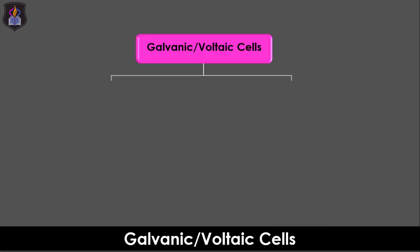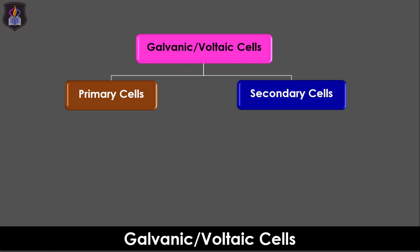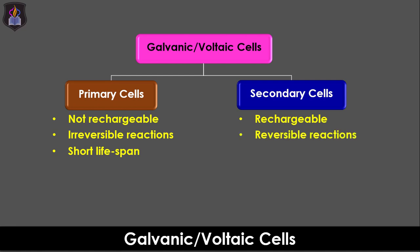There are two types of galvanic cells: the primary cells and the secondary cells. Primary cells are those devices that cannot be recharged once they are used up. In other words, their reactions are irreversible and they have a short lifespan. While secondary cells are those devices that can be recharged when used up because their reactions are reversible and they do have a longer lifespan than primary cells. Secondary cells are also called storage cells.